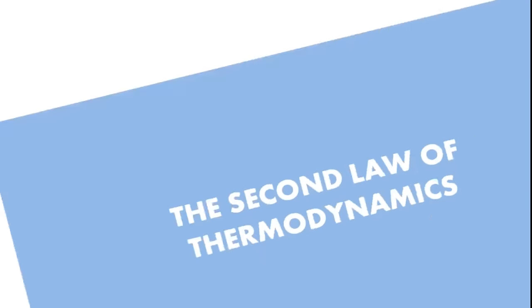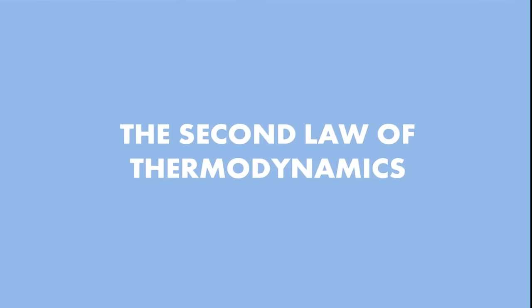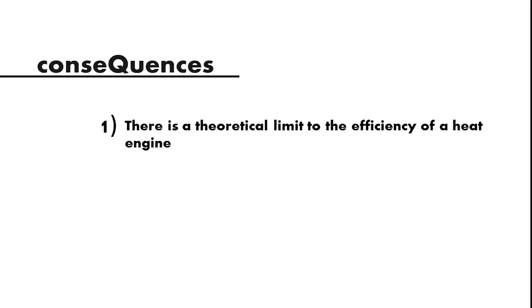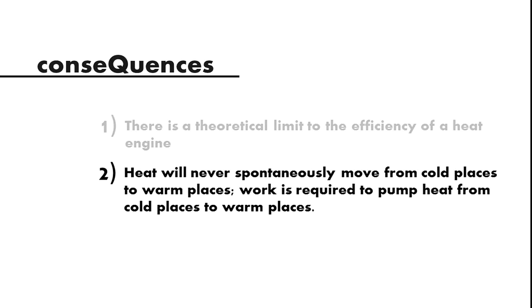And that something is called the second law of thermodynamics. Now we said that there were two consequences of this law. The first consequence was there is a theoretical limit to the efficiency of a heat engine. The second consequence of the second law of thermodynamics is that heat will never spontaneously move from cold places to warm places. Work is required to pump heat from cold places to warm places.